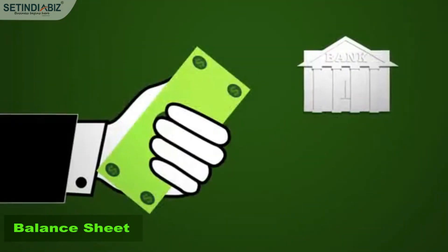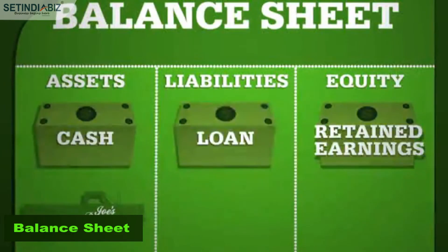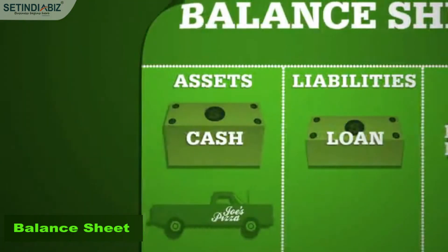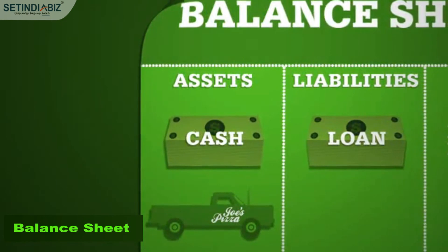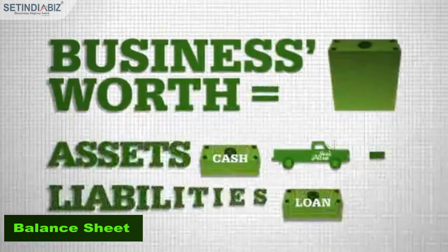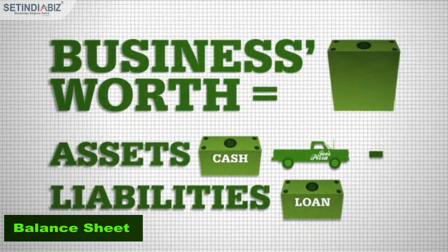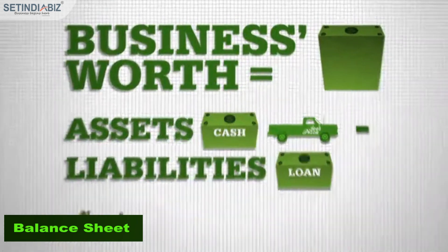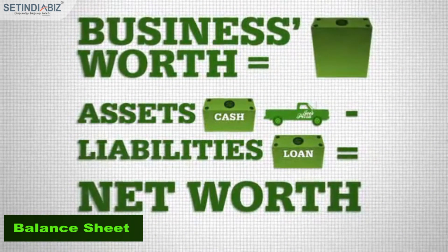Every month Joe makes a payment against his loan. He reduces his liability by the amount of the payment and his cash is reduced by the same amount. To find out his business worth, Joe subtracts liabilities from his assets. This equals the net worth of his business.